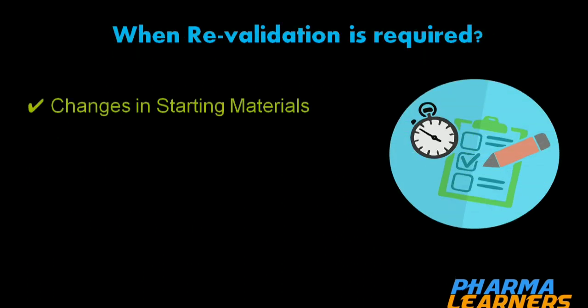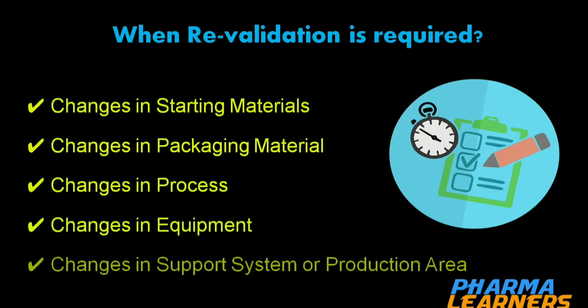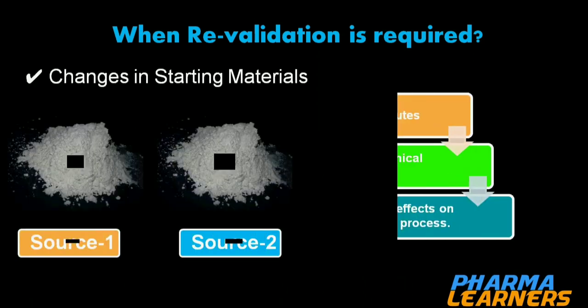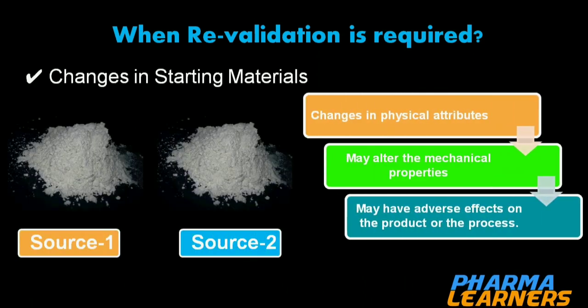The first example: change in starting material. If you change the source of material, there may be changes in physical attributes which can alter the mechanical properties of the material and consequently may have an adverse impact or effect on the product or the process.